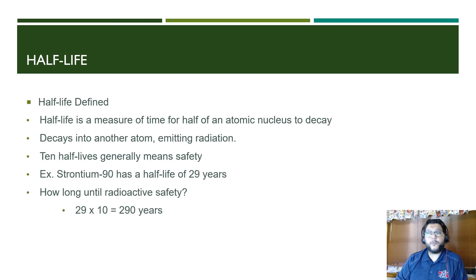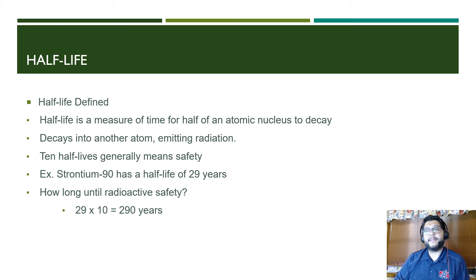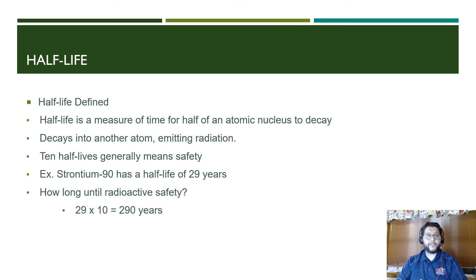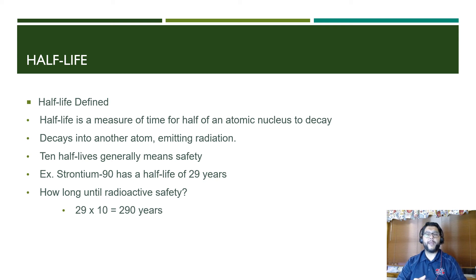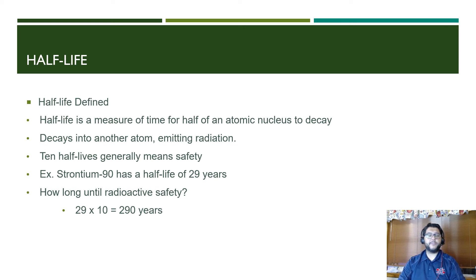Half-life is the amount of time it takes for a nucleus to decay and break down. It doesn't go away — it decays into another atom and emits radiation. Generally, you need about 10 half-lives, leaving about 0.1% remaining, for a material to be considered safe. For example, Strontium-90 has a half-life of 29 years, so you'd expect about 290 years until radioactive safety. You will probably see something like that in a multiple-choice question on the AP exam.